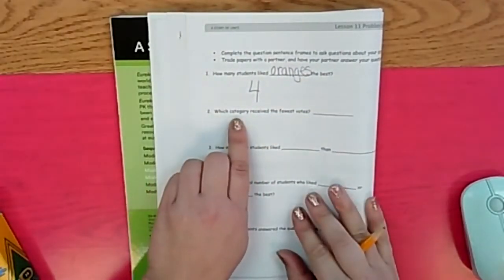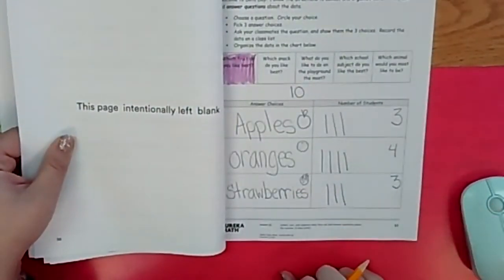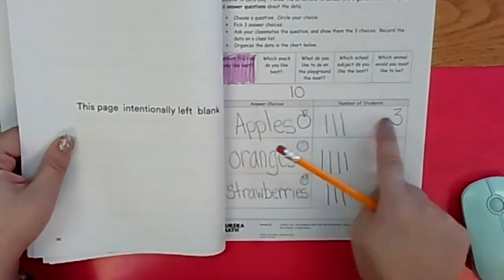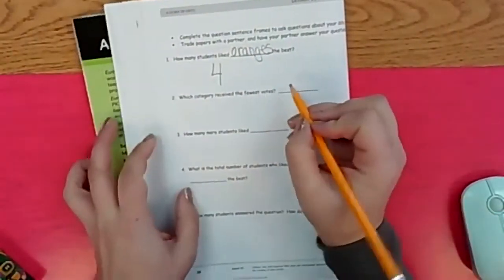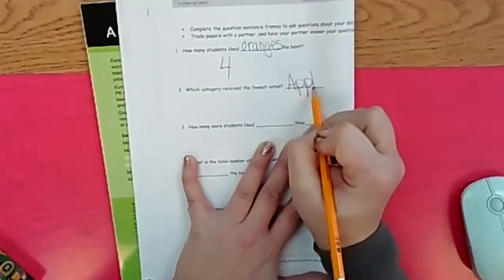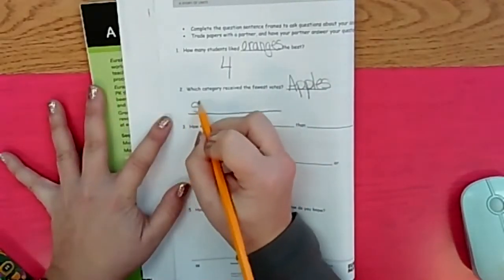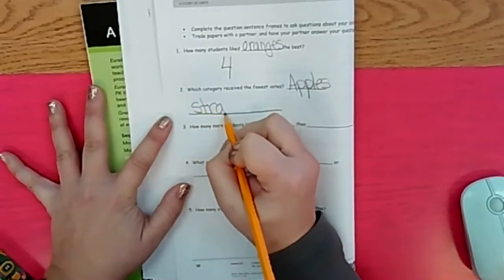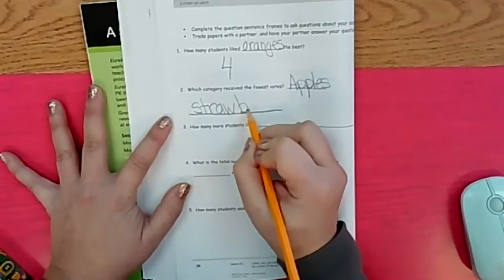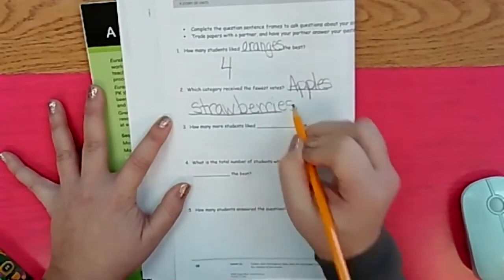Okay. Which category, so which fruit, receives the fewest votes? Okay, flip back. Who had the smallest number of votes? There's two answers. Yep, apples and strawberries. We got to write both of those. That's kind of hard. Let's put apples up here and we'll write strawberries on the next line. Apples, A-P-P-L-E-S. And then down here, let's make a line for strawberries, S-T-R-A-W-B-E-R-R-I-E-S. Apples and strawberries.